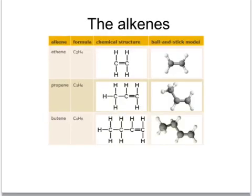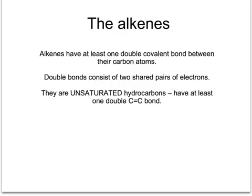Another set of compounds which are hydrocarbons are the alkenes. They contain only carbon and hydrogen atoms, but this time they have a double bond between two of the carbon atoms. We call these compounds unsaturated. Each of these carbon-carbon double bonds is made up of two shared pairs of electrons. So whereas the alkanes have only got single carbon-carbon bonds and are saturated, the alkenes have got at least one double covalent bond, consisting of two shared pairs of electrons, and that makes them unsaturated.